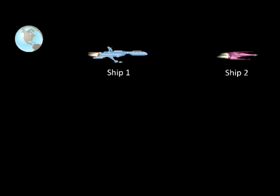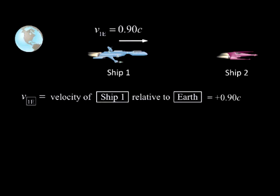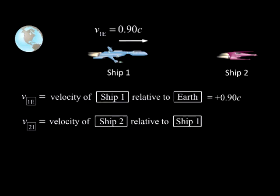We now set up the situation so that everything is exactly the same, save the amplitudes of the relative speeds, where now V1e equals 0.90c and V21 equals 0.20c.